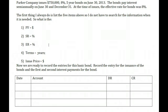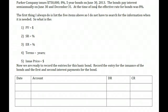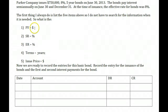Let's look at a company. Parker Company issued $750,000, 8% five-year bonds on June 30, 2013. The bonds pay interest semi-annually on June 30 and December 31. At the time of issuance, the effective rate for bonds was 8%. The first thing I always do is list the five items so I do not have to search for information when it is needed. The face value of the bonds is the physical amount we're actually issuing — $750,000. That's the amount we must repay.